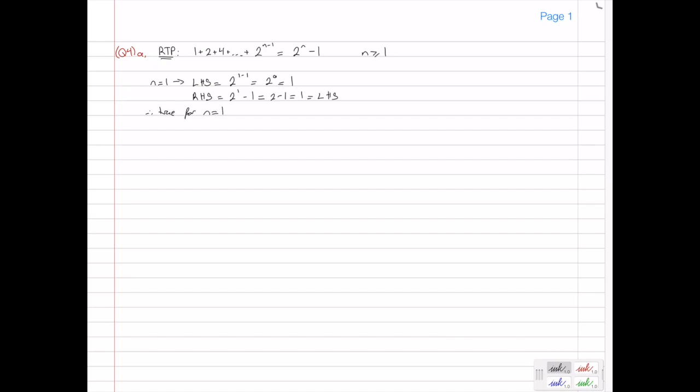Now we need to make our inductive hypothesis. So our inductive hypothesis is to assume that it's true for n equals k. So we're going to say assume n equals k is true. Now, when we make an inductive hypothesis, it's always a very good idea to actually write down what the hypothesis is. So yes, okay, we've assumed that it's true for n equals k, but what does that actually mean?